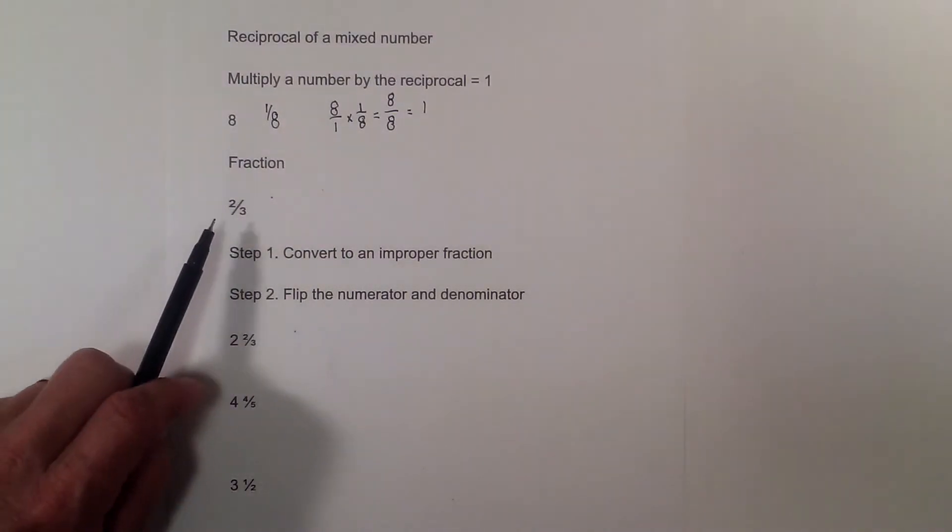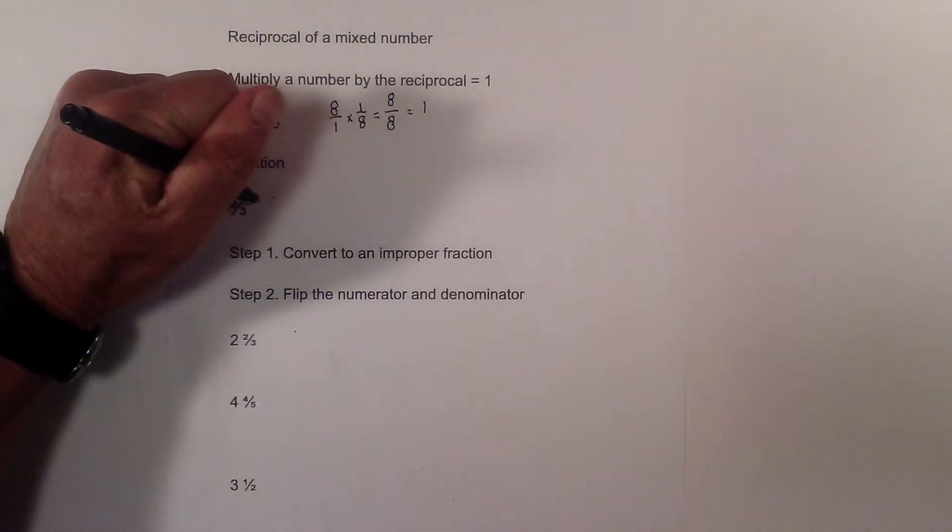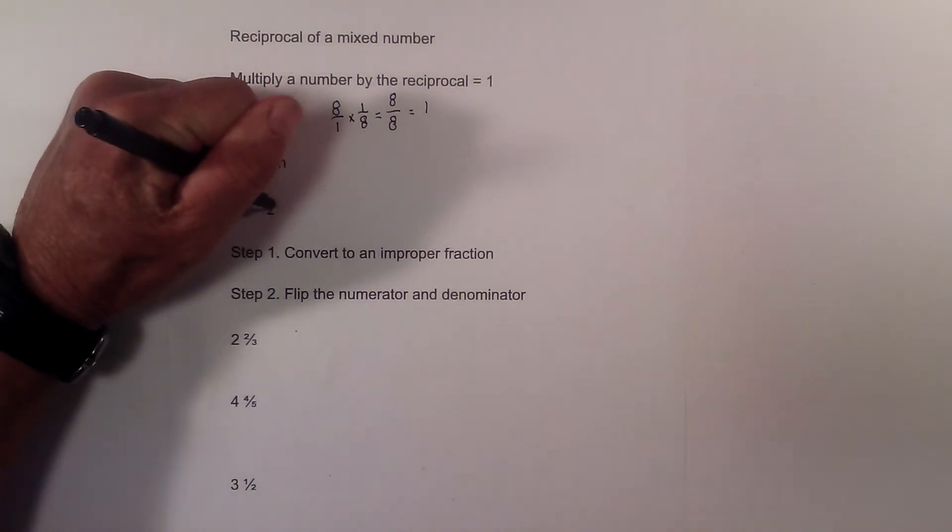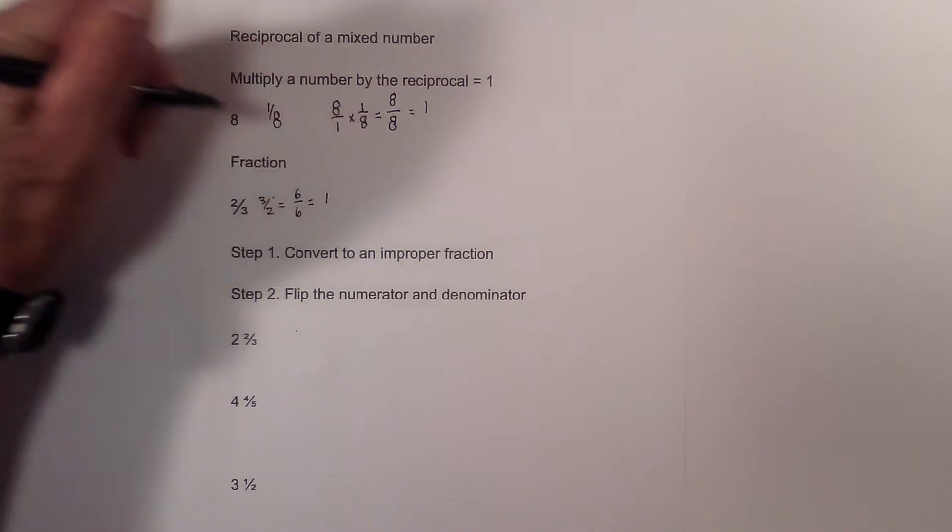Anytime you have a fraction, you just flip the numerator and the denominator. The reciprocal of 2 thirds would be 3 over 2. And if you multiply that together you get 6 over 6, which is equal to 1.